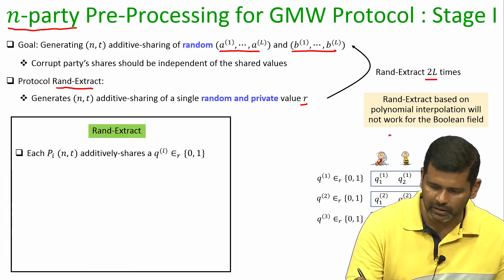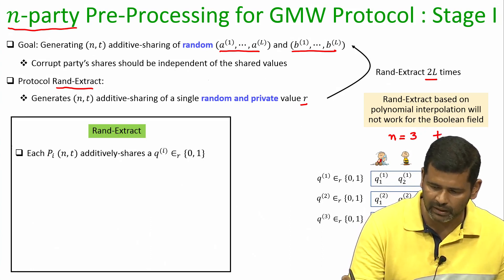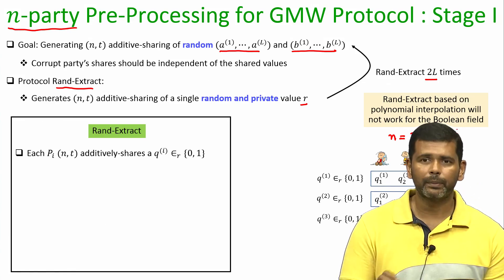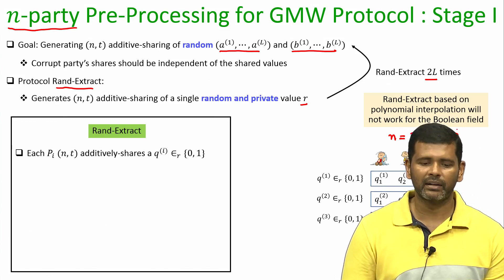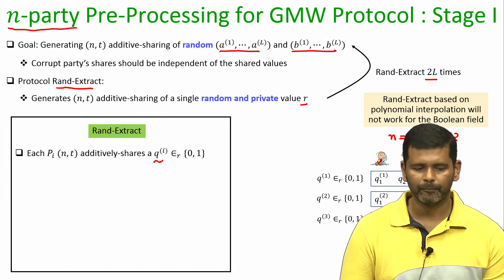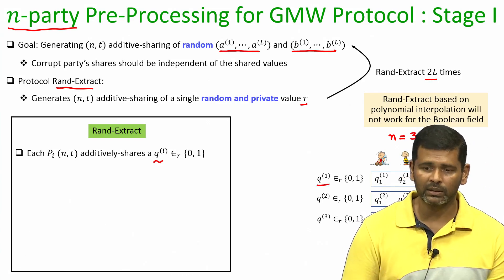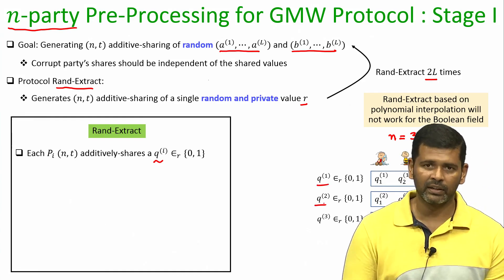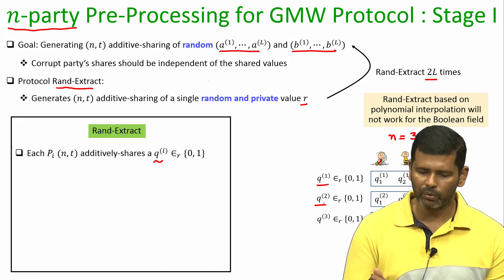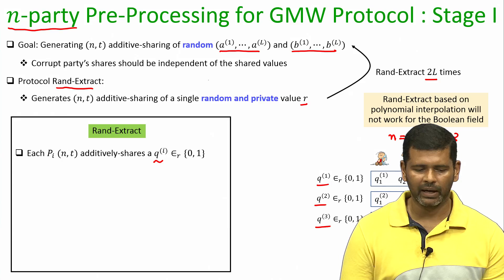Let me demonstrate this process assuming n equals 3 and t equals 2. Each party will act as a dealer and secret share a random bit: P1 acts as a dealer and secret shares Q1, P2 acts as a dealer and secret shares Q2, and P3 acts as a dealer and secret shares the bit Q3, which is random.